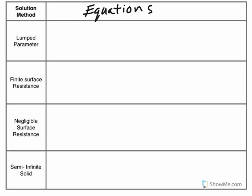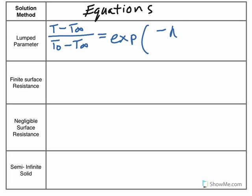For the lump parameter, the equation that we refer to is the temperature at the time we're concerned about minus the temperature of the surroundings divided by the initial temperature minus the temperature of the surroundings equals E to the negative H area times time over rho Cp times the volume.